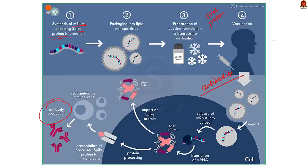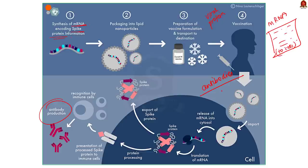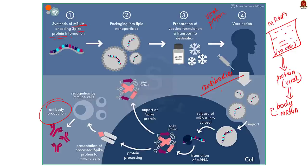mRNA is like a little instruction manual that tells our cells how to make proteins. Scientists use a small piece of mRNA containing instructions for making a specific protein from a virus. When we get a vaccine, the mRNA is injected into our body. Our cells read the instructions and start making the viral protein. Our immune system recognizes the viral protein as something foreign, starts to fight it, and learns how to recognize and destroy that specific virus. So if we ever come in contact with the actual virus, our immune system is already prepared to fight it off.